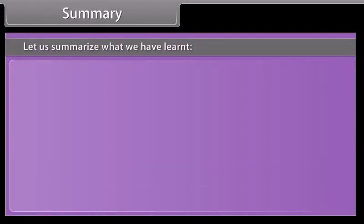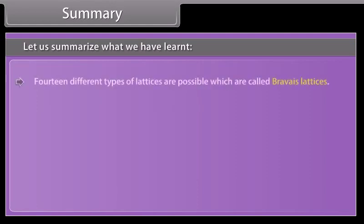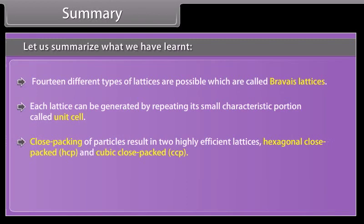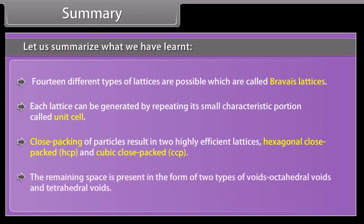In summary: 14 different types of lattices are possible, called Bravais lattices. Each lattice can be generated by repeating its small characteristic portion called the unit cell. Close packing of particles results in two highly efficient lattices: hexagonal close-packed (HCP) and cubic close-packed (CCP). The remaining space is present in the form of two types of voids: octahedral voids and tetrahedral voids.